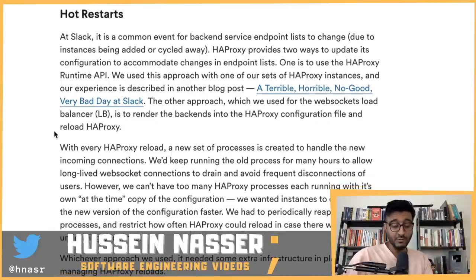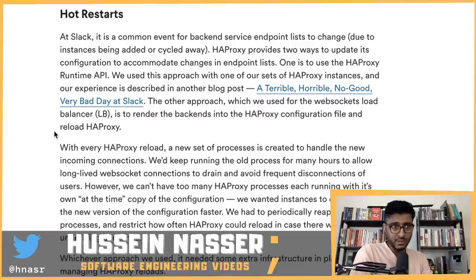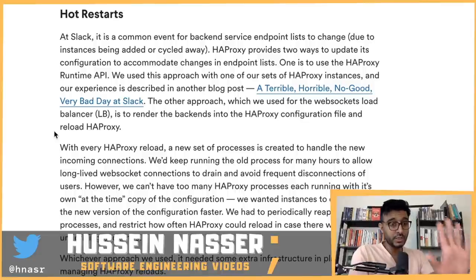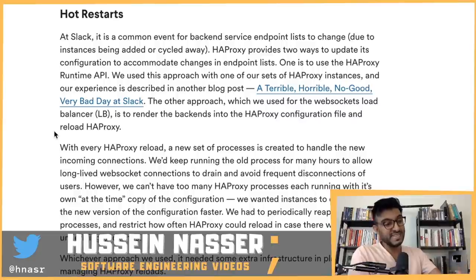They started spinning up backends like there was no tomorrow. But with more backends, you need to load balance those backends — that means you have to update the proxy to make it aware of them. They wrote custom code to use the runtime API to update it, so as old backends went stale they'd be removed and new ones added. Then they noticed HAProxy was not forwarding traffic to those shiny new backends.